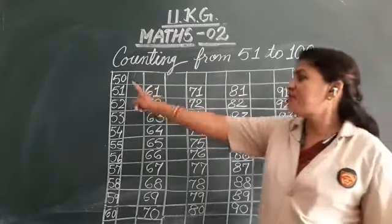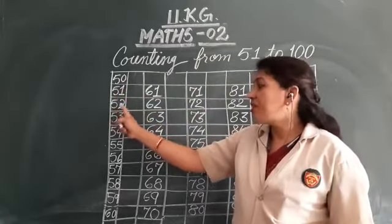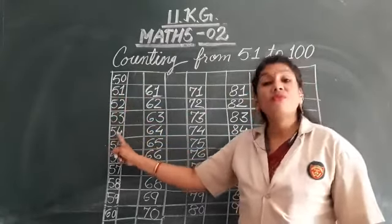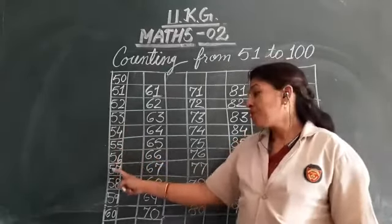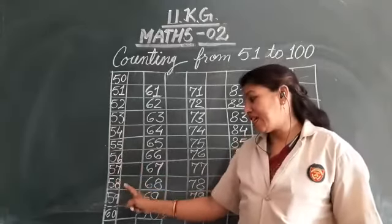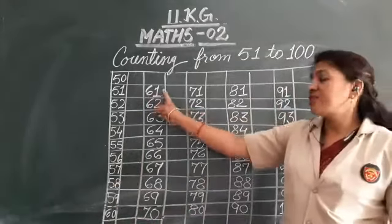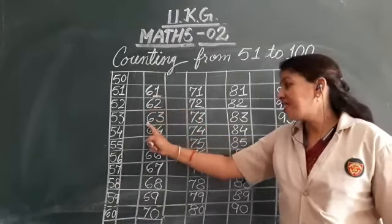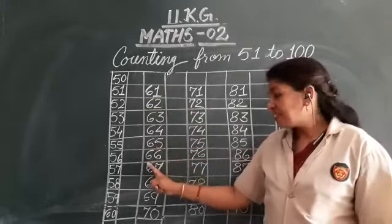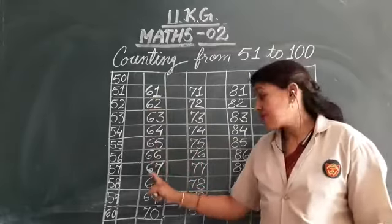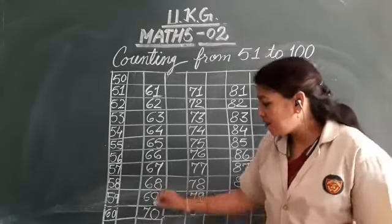Again we will start from 50: 51, 52, 53, 54, 55, 56, 57, 58, 59, 60. 61, 62, 63, 64, 65, 66, 67, 68, 69 and 70.